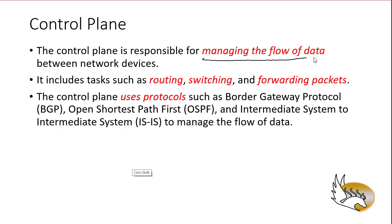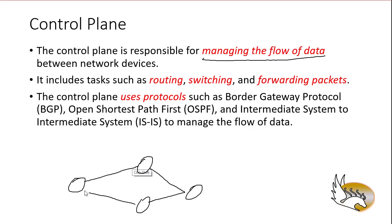Let's go to control plane. We are talking about the flow of data — not the data itself, not the management of data — but how data flows between network devices. For example, if we have multiple routers connected together and from router 1 to router 4 there are two different paths — one through router 2 and one through router 3 — deciding to send data through router 2 is controlling the flow of data through the control plane.